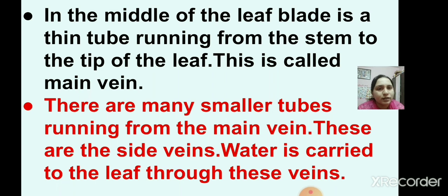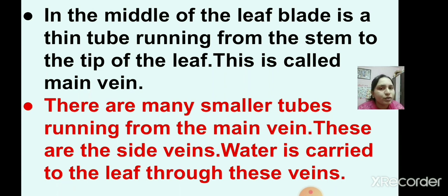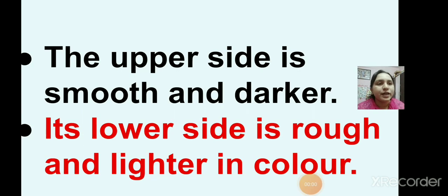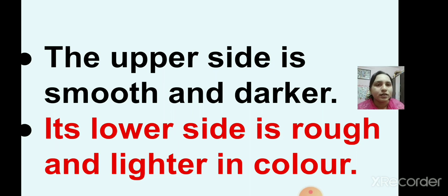There are many smaller tubes running from the main vein called side veins. Water is carried to the leaf through these veins. If you take a leaf, the upper side is smooth and darker, while the lower side is rough and lighter in color.